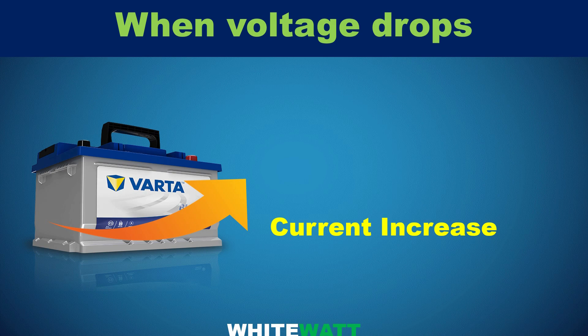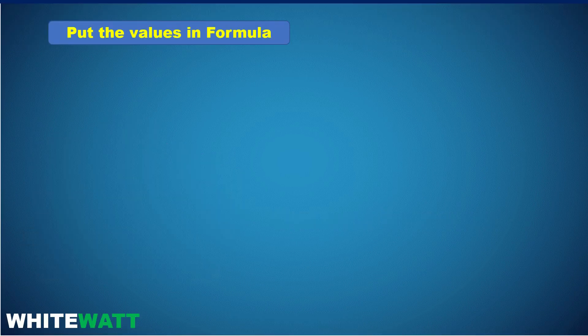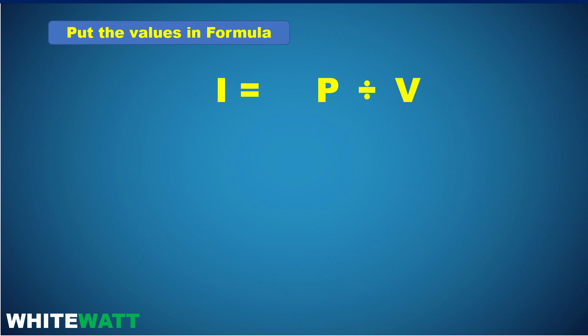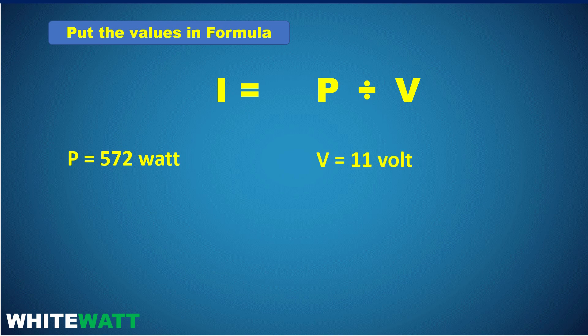Now put the values in the current formula. The current formula is I = P ÷ V. We have power of 572 watts and voltage of 11 volts. So putting the values in the formula: 572 ÷ 11, the answer becomes 52 amperes.